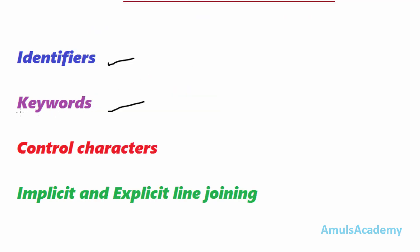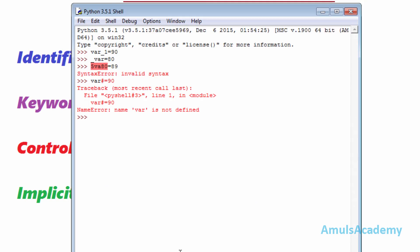Now we'll move to keywords. Keywords are nothing but words which have a predefined meaning — for example, 'and', 'or', 'else'. These are called keywords. We can't use keywords as identifiers; if we try to use keywords as identifiers, it will give an error.